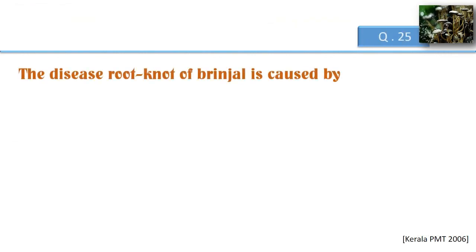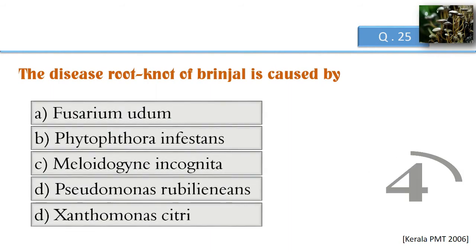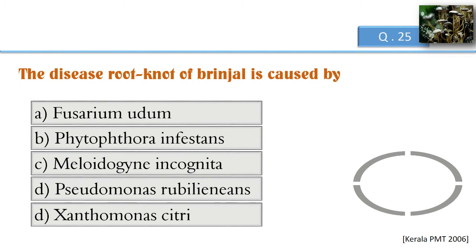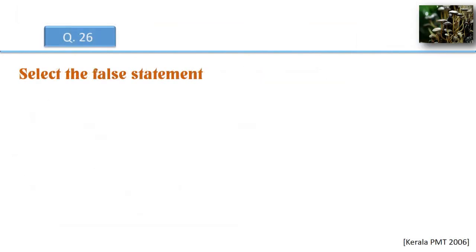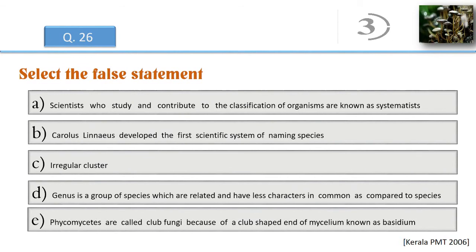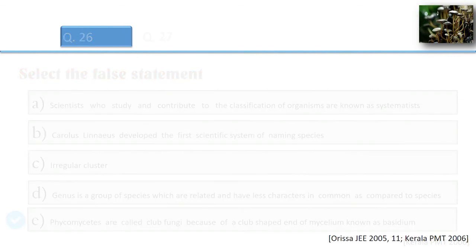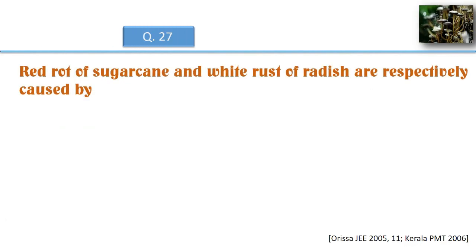The disease root knot of brinjal is caused by which organism? Select the false statement. Red rot of sugarcane and white rust of radish are respectively caused by which organisms?